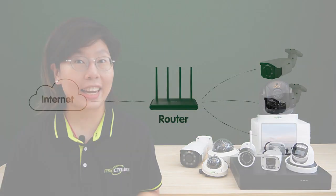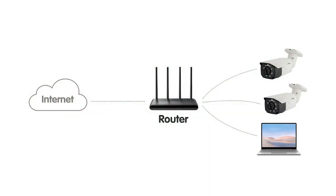IP cameras, short for internet protocol cameras, are cutting-edge devices that capture and transmit video data over computer networks and the internet. These cameras have revolutionized the surveillance industry by offering advanced features and functionality that surpass traditional analog cameras.